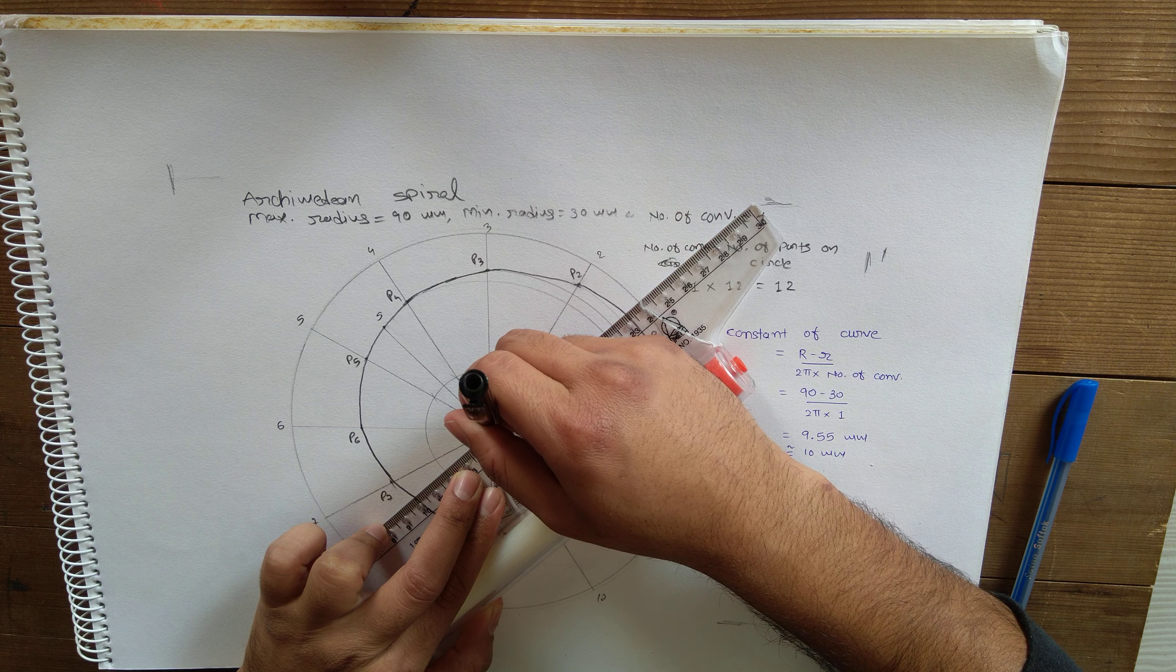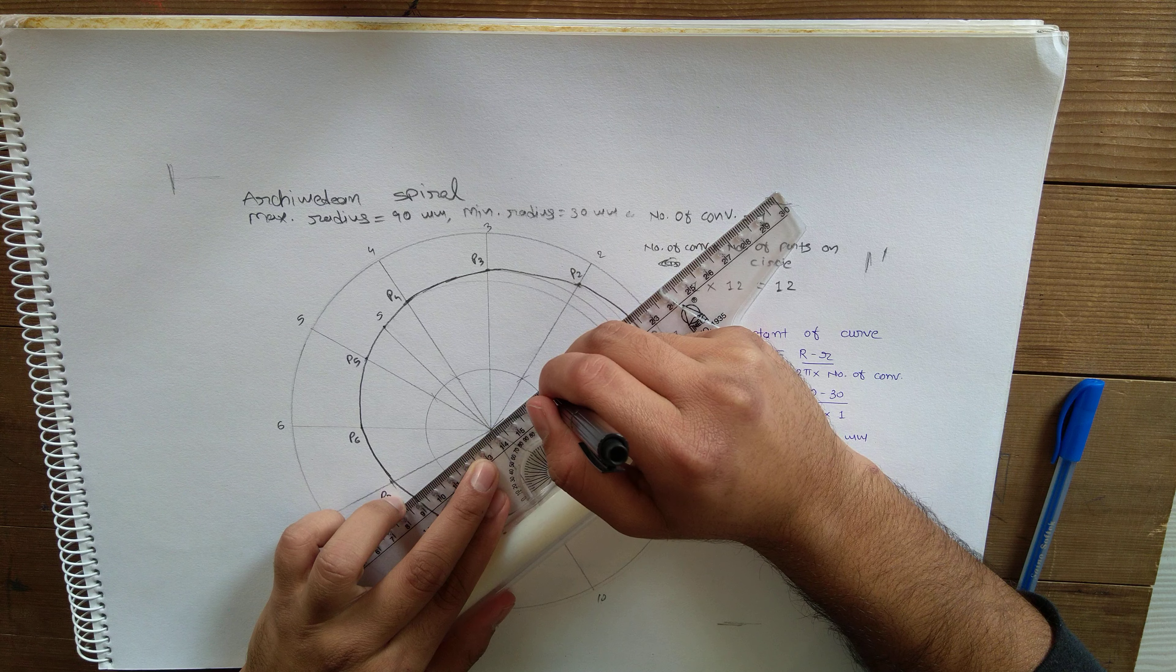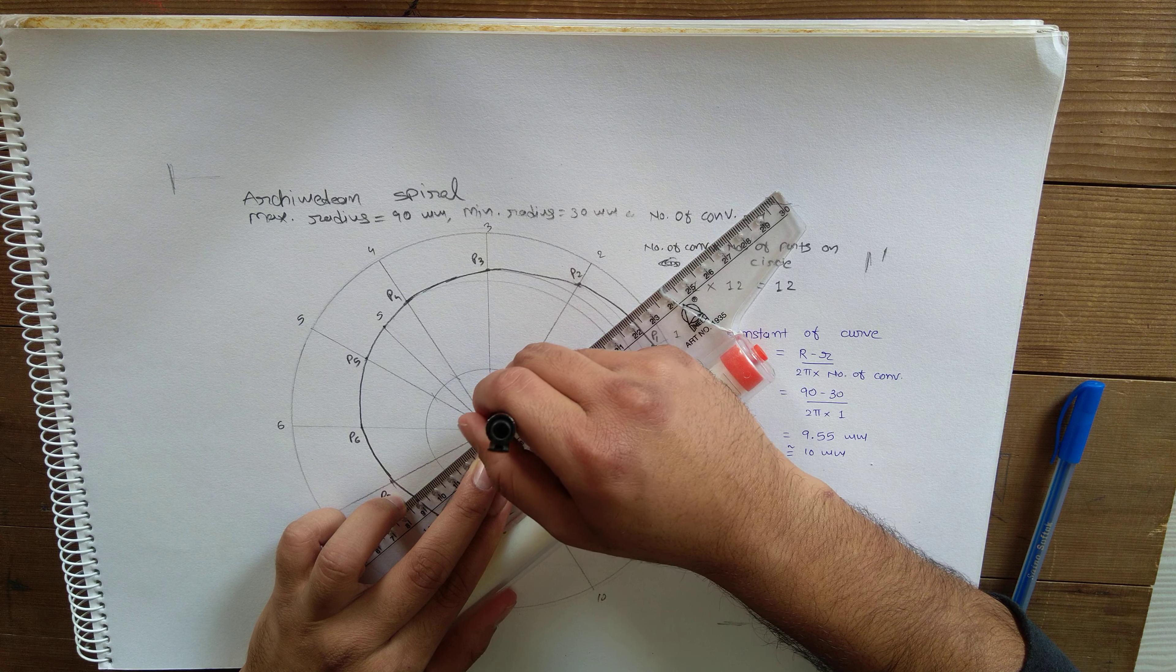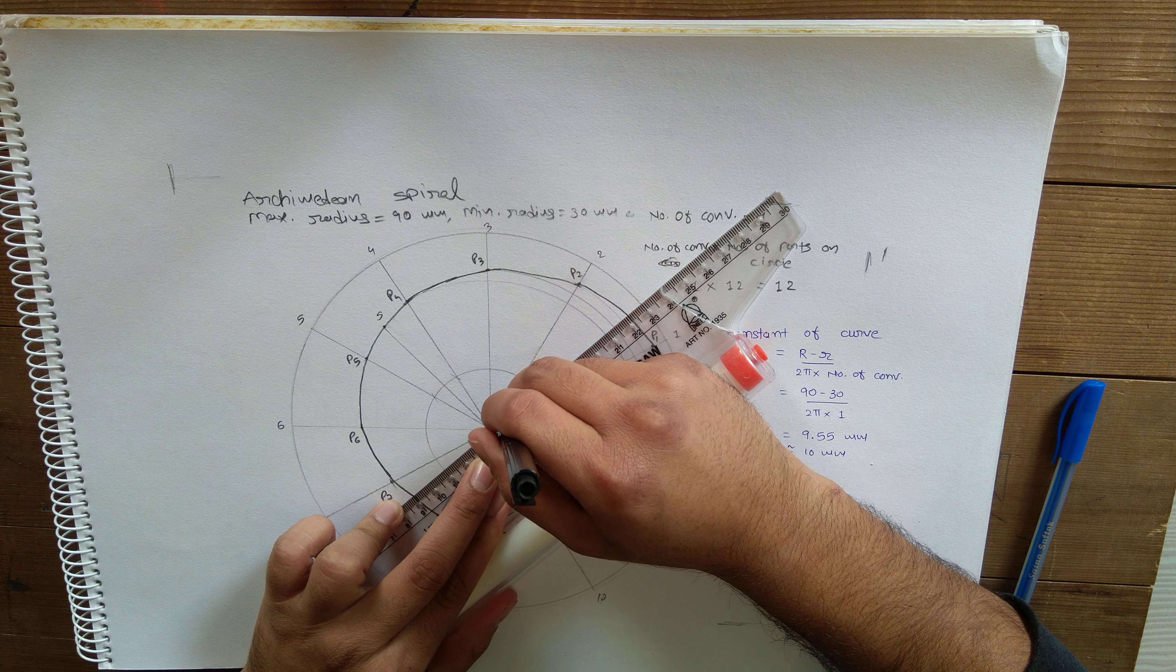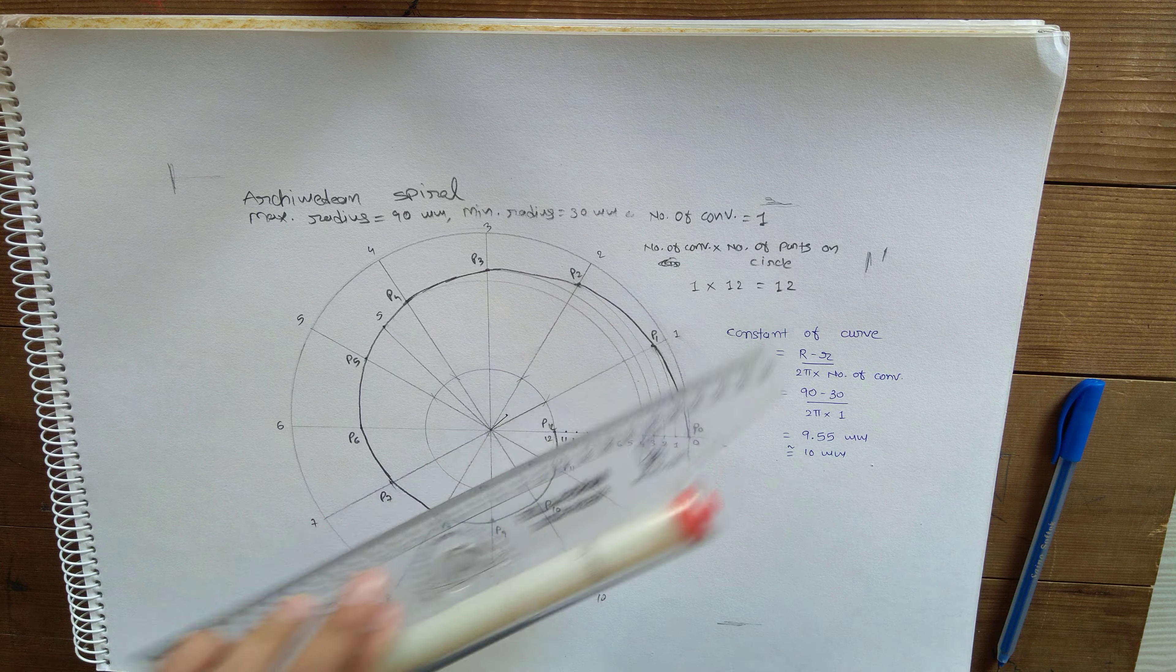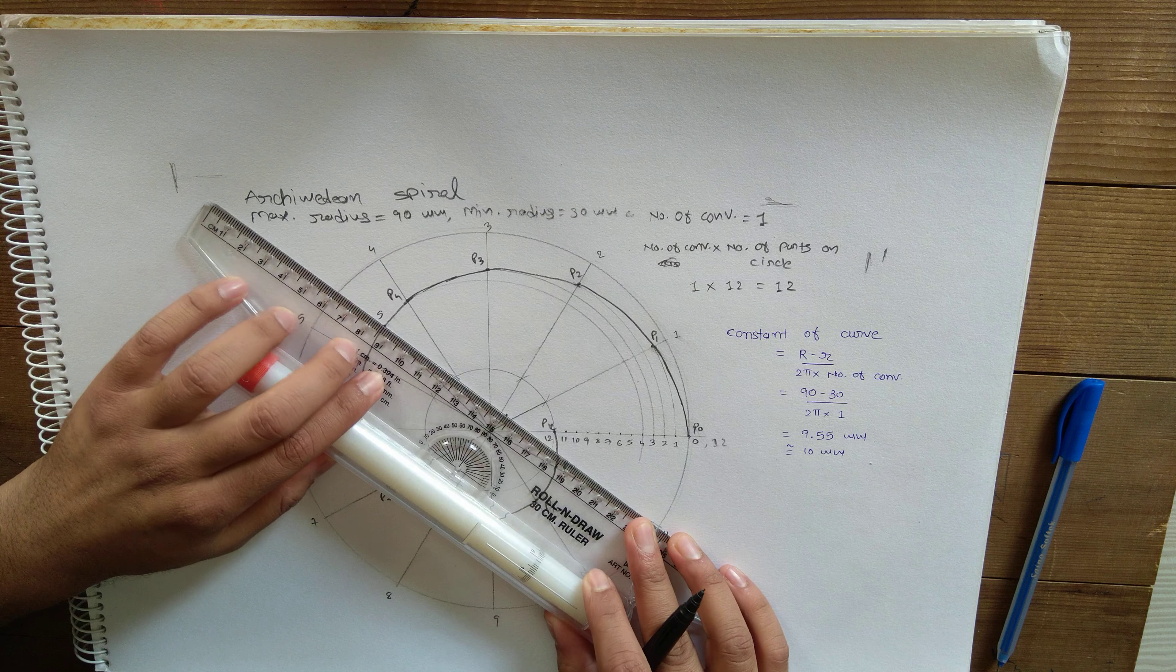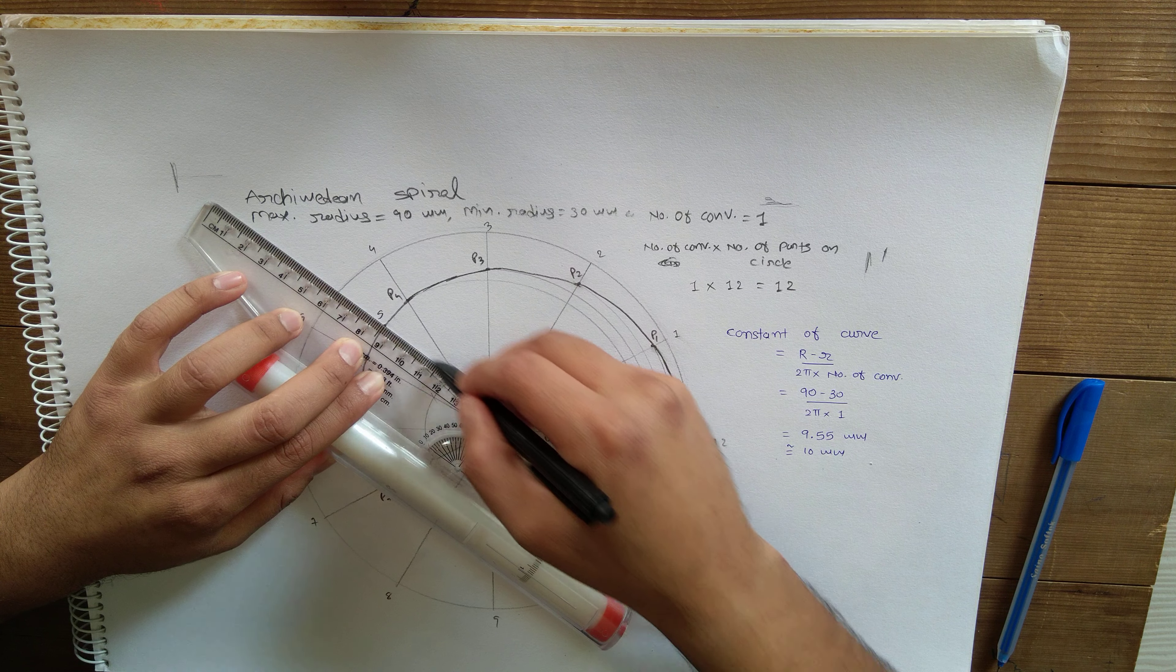9.55 actually, but you can't take 9.55 with this scale, you can always approximate this distance. So this is 10mm, and you can join this endpoint of the line with S, which will give you the normal.